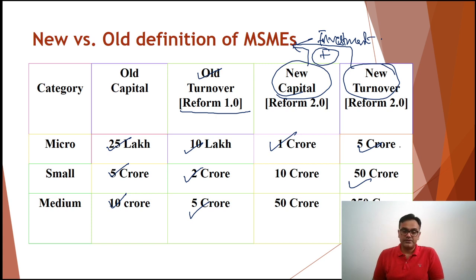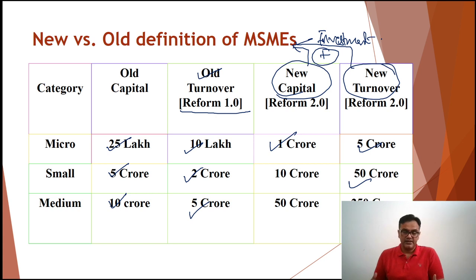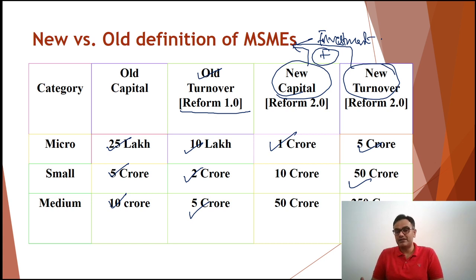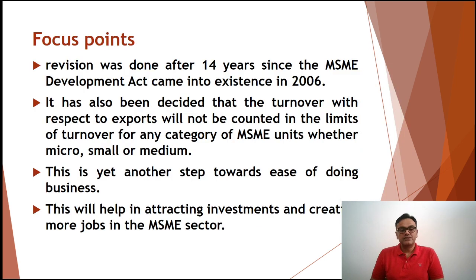You may recall that the 2018 budget gave relief to companies below the Rs. 200 crore turnover limit for corporate income tax, which was later raised to Rs. 400 crore in 2019-20. These threshold limits have been increasing incrementally. The key focus points for the exam: first, this revision was done after 14 years since the MSME Development Act came into existence in 2006 — so better late than never.